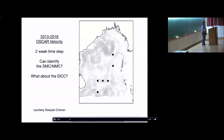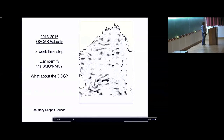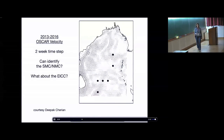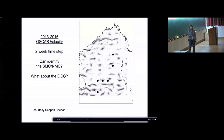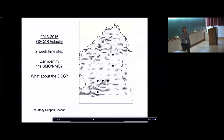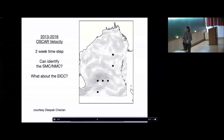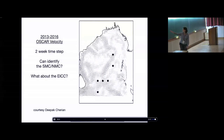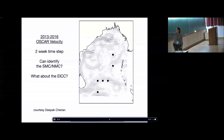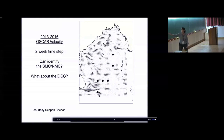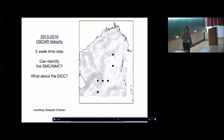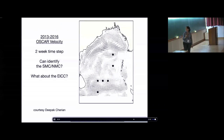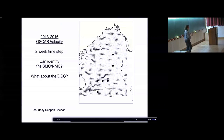Here's a more quantitative view using the OSCAR current velocity — a satellite product including Ekman transports and geostrophic estimates from sea surface heights. This covers three years with a two-week time step. Try to identify the northeast and southwest monsoon from the direction of the currents. The clearest signal is the westward propagation — that's the Rossby wave signal, which dominates this movie.